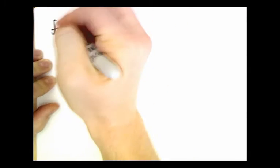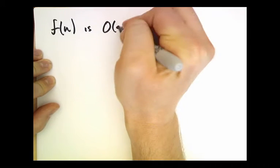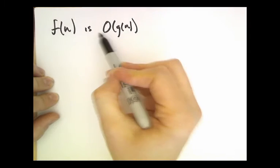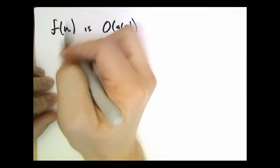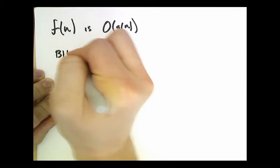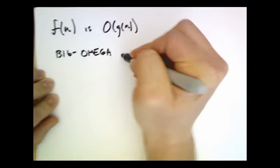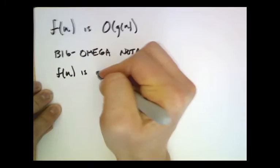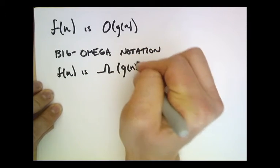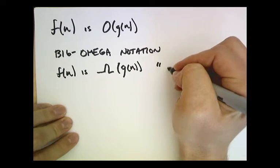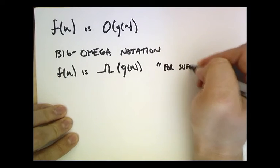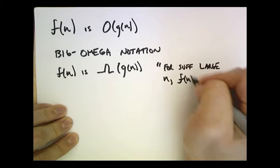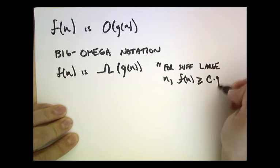Remember, we said that f of n is big O of g of n whenever, for sufficiently large n, f of n is always less than or equal to some constant times g of n. Now there's also something called big Omega notation, and we say that f of n is big Omega of g of n. In words, this roughly means that for sufficiently large n, f of n is greater than or equal to some constant times g of n.